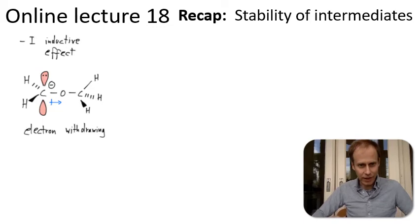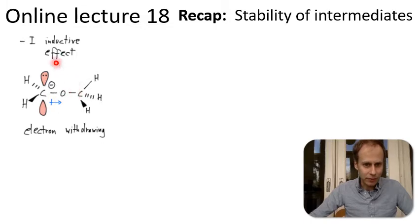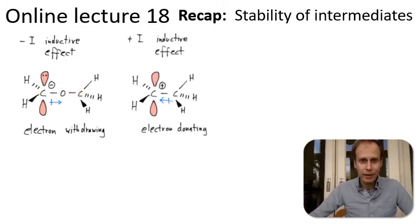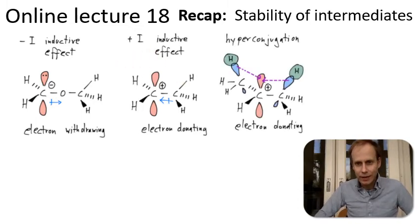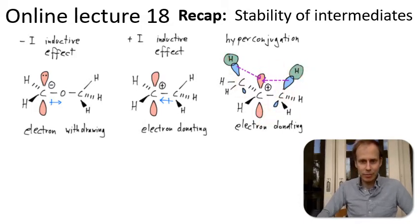An example of electronic effects are inductive effects. There is a negative inductive effect that is based on electronegativity differences in the atoms of a molecule, and for the negative inductive effect you have stabilization of carbanions. There is a positive inductive effect that stabilizes carbocations. There is hyperconjugation, and that usually works together with the positive inductive effect, where there are additional sp3 molecules stabilizing the carbocation.